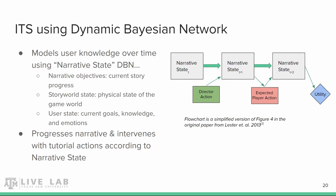Specifically, frustration and boredom are what's being targeted. For a narrative state t, the director uses the DBN to decide the most probable resultant state of some arbitrary action, resulting in narrative state t+1. The director then uses t+1 to guess the most probable resultant state of the player's expected response, resulting in narrative state t+2. The narrative tutorial utility of t+2 is calculated, and the highest calculated utility state of all possible t+2 states is how the director decides what action to take at any point in time.